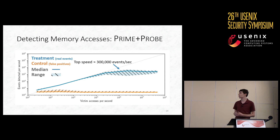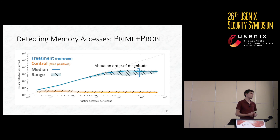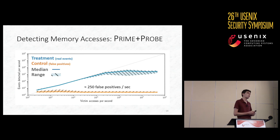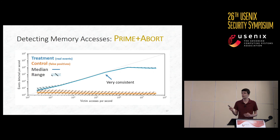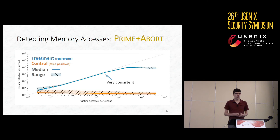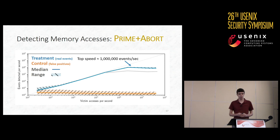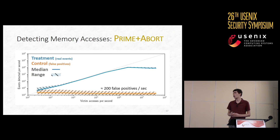Perfect performance would be directly along the y=x line, detecting all victim accesses with no false positives. Prime and Probe does very well — detecting almost all of the victim's memory accesses over a wide range of frequencies until it levels off at a top speed of about 300,000 events per second on our machine. The solid line on each graph is the median of all trials and the shaded area is the approximate range. Both axes are on a log scale, so there is quite a bit of variation from trial to trial — almost an order of magnitude difference at faster speeds. We also observe about 250 false positives per second with Prime and Probe. For Prime and Abort, one of the first things you might notice is that it is very consistent — the range of observations is very tight around the median line. Prime and Abort detects almost all victim memory accesses, has a top speed of a million events per second — over three times faster than Prime and Probe — and observes about 200 false positives per second, fewer than Prime and Probe.